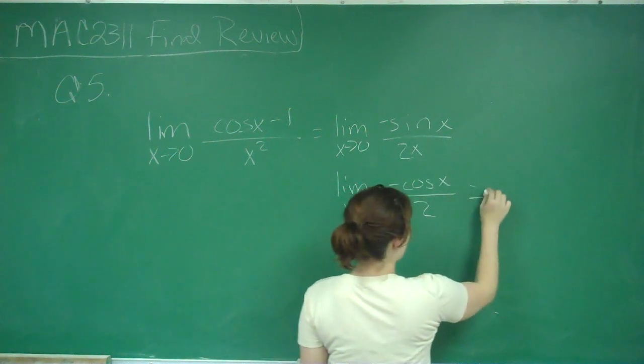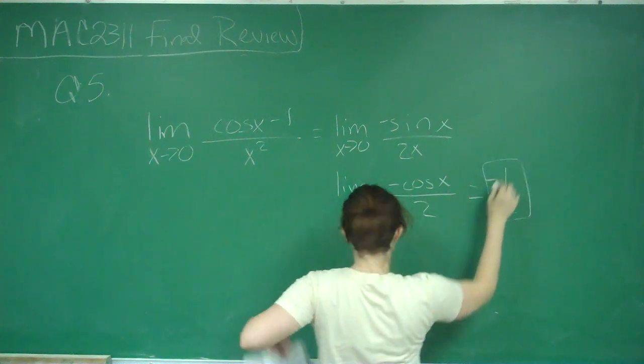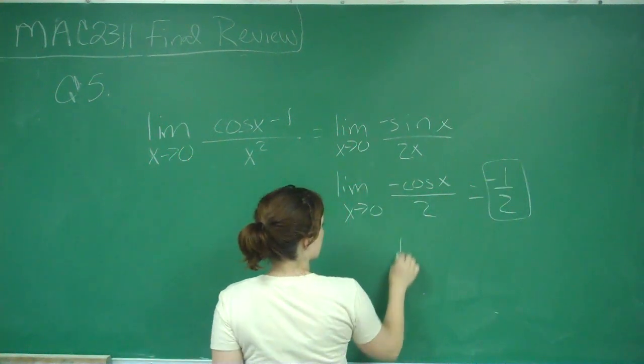When I plug in zero, I get negative one half, which is your answer, and that is letter D.